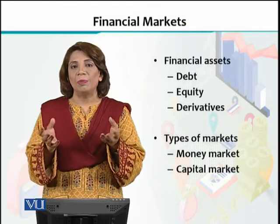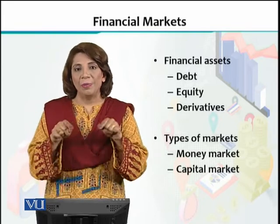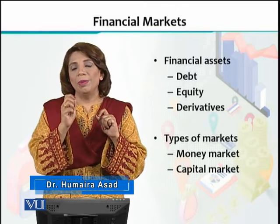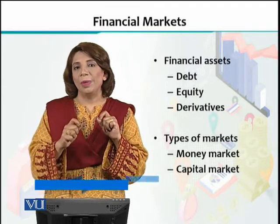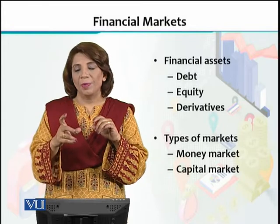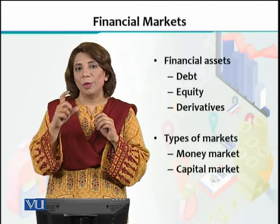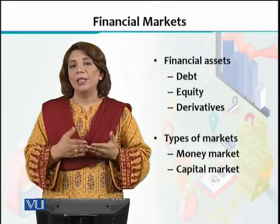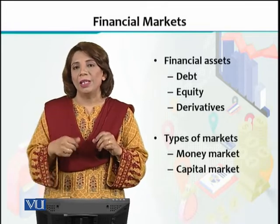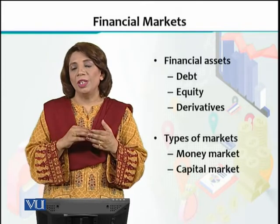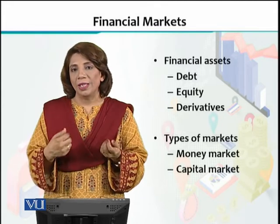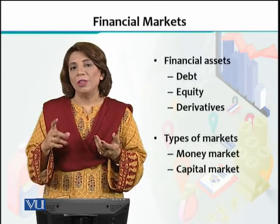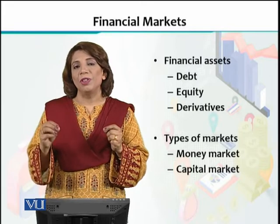Debt ke instruments ho sakte hai — for example, aap ne ek certificate khariida hai, jo ke koi company market mein ja ke sell karay gi aur bolay gi ke mere se yeh certificate aap buy kar lein, aur hum aap ko ek saal ke baad itna return dein ge. That would be, for example, a fixed five percent or two percent on top of the amount jis se aap woh certificate ko buy kar rahe hain. Firms is tarah ki instruments tab sell karti hain jab unko paise chahiye — unhon ne ek certificate apne naam ke saath issue kiya aur uthaaya market se capital, apni koi bhi financial needs ko satisfy karne ke liye. Us ke badle mein woh aapko kya de raha hai? After a year, aapki principal amount aur us ke saath ek fixed return dene ja raha hai.